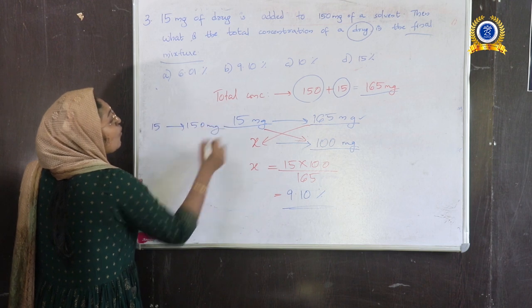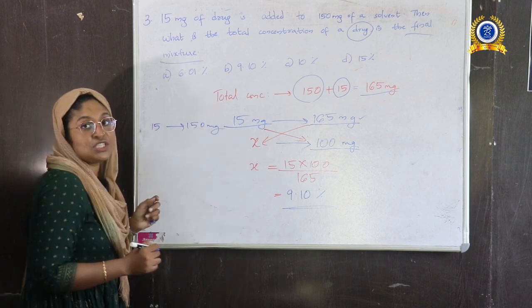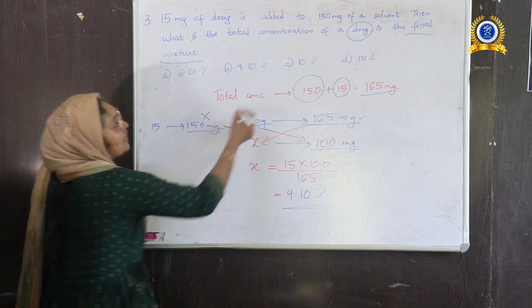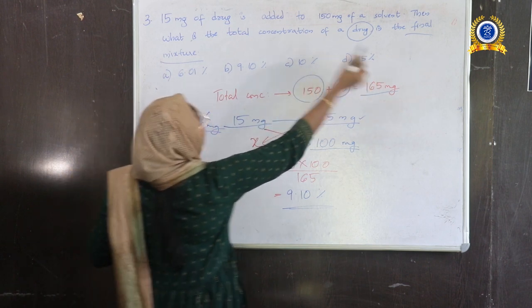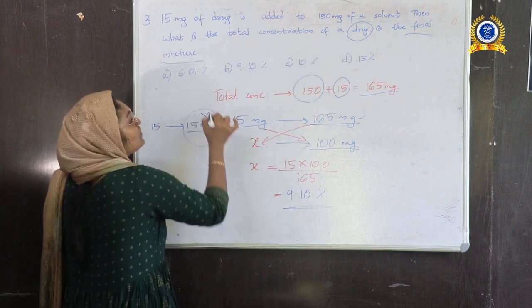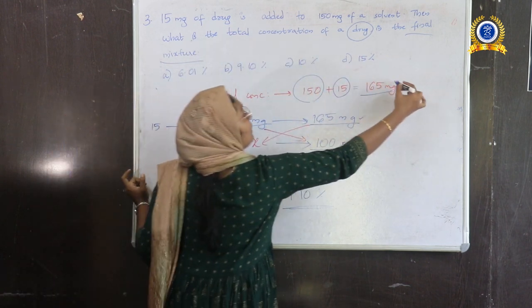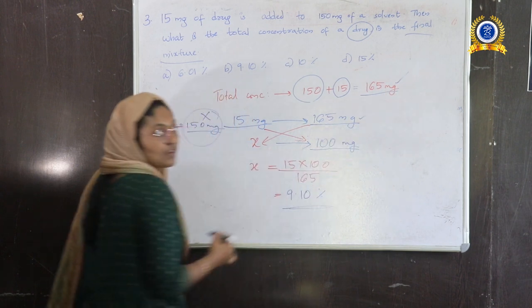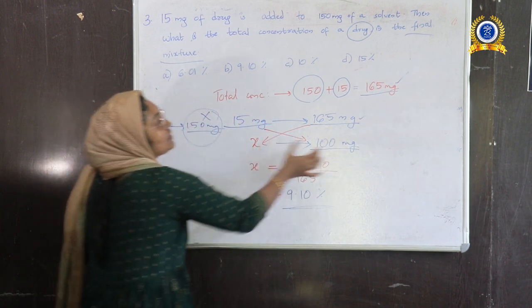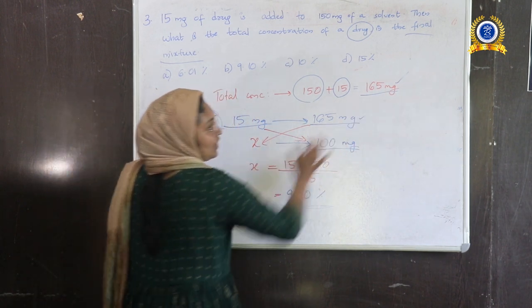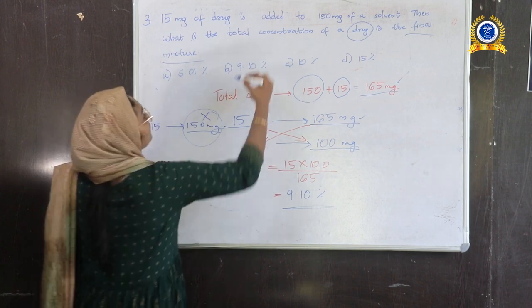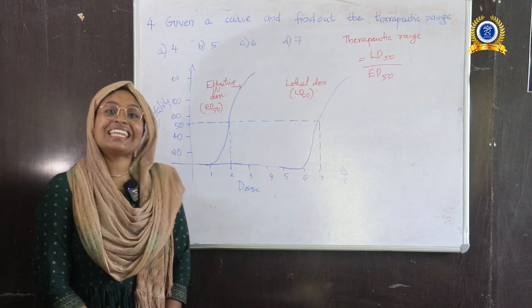The total mixture is 15 + 150 = 165 mg. Using cross multiplication: X × 165 = 15 × 100, so X = 15 × 100 ÷ 165 = 9.10%. The answer is Option B.